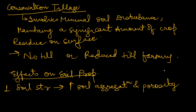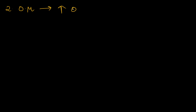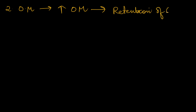Conservation tillage also improves water infiltration and retention. Secondly, regarding organic matter — it increases organic matter content due to retention of crop residues, which also promotes microbial activity. Because the crop residues are retained on the surface, organic matter is increased and microbial activity is enhanced.